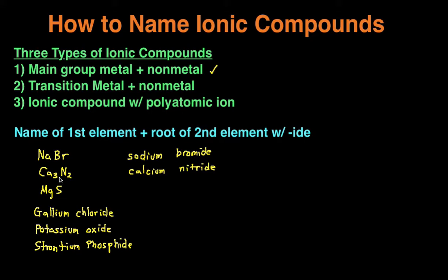Notice here we have the subscript two, but we didn't use any prefixes. Unlike naming molecular compounds, for ionic compounds we don't have to use any prefixes to indicate the number of elements. Next example: MgS. The first element — just name it — MG's name is magnesium. The second element, S, we add -ide to the root. S is sulfur, so adding -ide to the root of sulfur, it becomes sulfide. The name for MgS is magnesium sulfide.